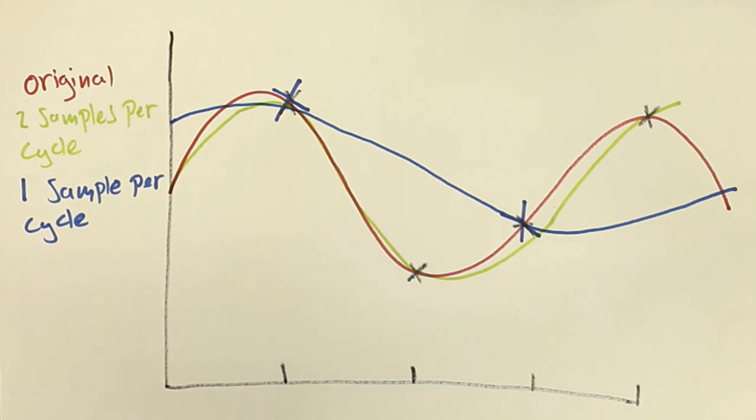44.1kHz is fine for consumer audio, because we can't hear above about 20kHz anyway. So, an anti-aliasing filter is always applied to the audio, cutting off all frequencies above the Nyquist frequency. This way, you get perfect reproduction of the original sound without aliasing.